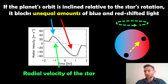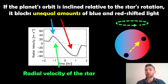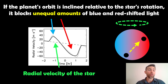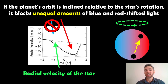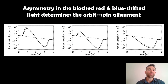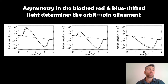Now if that orbit is inclined — so on the right hand side the planet's orbit is inclined with respect to the rotation of the star — it's not going to block out equal amounts of blue and red shifted light. The star is going to appear maybe more red shifted than blue shifted, or the other way around, depending on how the orbit is oriented. We get an uneven amount of blue and red shifted light blocked during the transit. If it's really inclined, it may just go across one side and appear to be more blue shifted than red shifted. So we can measure the asymmetry in the blocked blue and red shifted light, which determines the orbit-spin alignment between the planet's orbit and the rotation of the star.